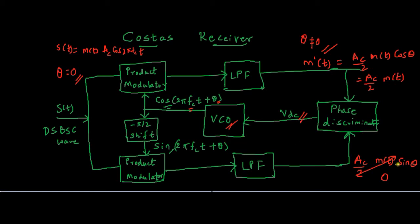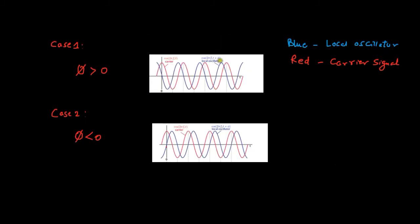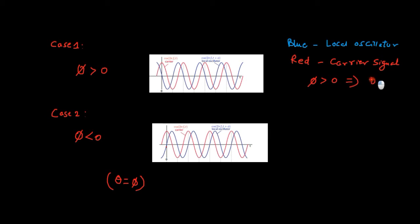There are two cases: θ (or φ) can be greater than 0 or less than 0. If φ > 0, it means the local oscillator signal (the blue signal) is leading the carrier signal. Internally, the frequency of the local oscillator is temporarily decreased until it catches up with the carrier wave, and eventually φ becomes 0 — the two signals match.